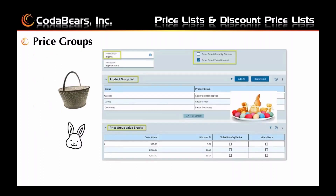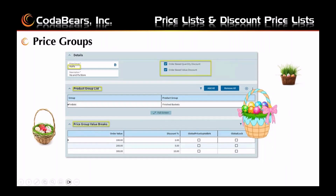Here's an example of a price group named Big Bucks. I've added the product groups for baskets, candy, and costumes, each with different order value breaks. You can see the order value breaks here: they get a discount of 5% for each order over $500, 10% if it's over $1000, etc. Here's another example of a price group named Ma and Pa, with one product group and different order value breaks for discounts. In this case I've also checked both boxes to allow order based quantity discounts and order based value discounts.